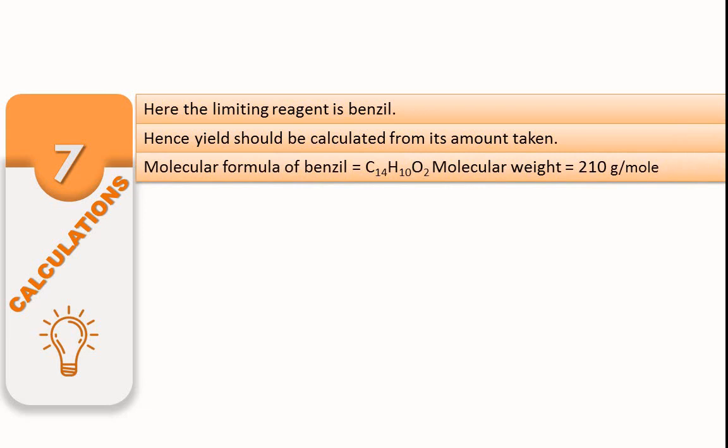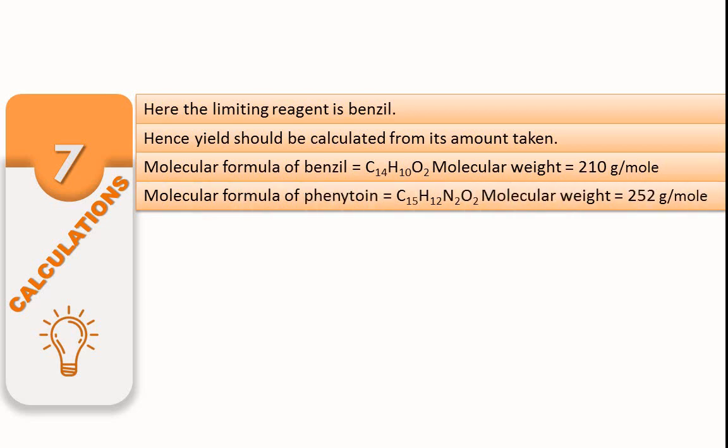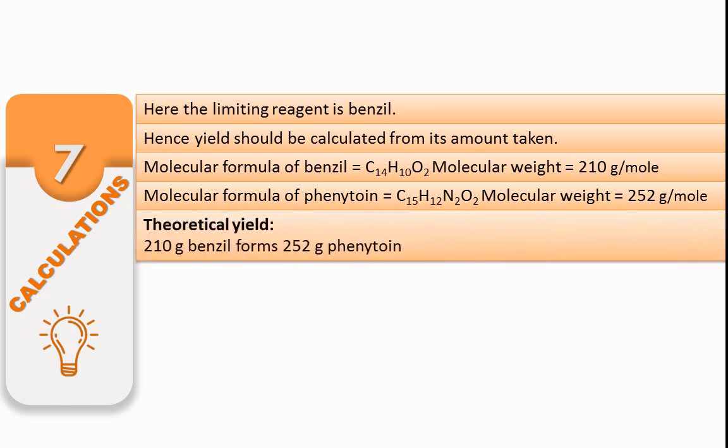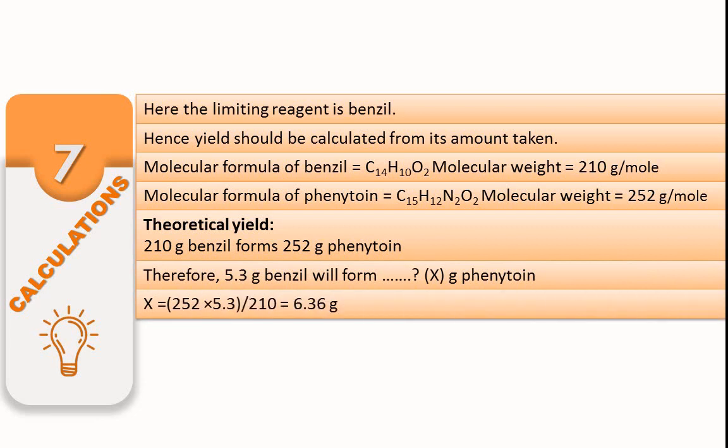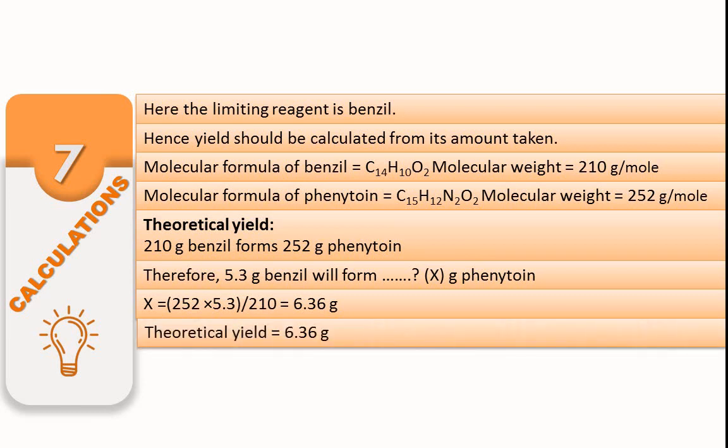Molecular formula of phenytoin is C15H12N2O2 and molecular weight is 252 g/mol. For theoretical yield: 210 gram benzil forms 252 gram phenytoin. Therefore, 5.3 gram benzil forms X gram phenytoin. By cross multiplication, X equals 252 times 5.3 upon 210 equals 6.36 gram. So the theoretical yield is 6.36 gram.